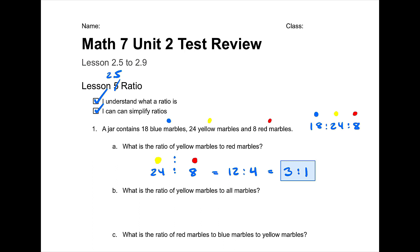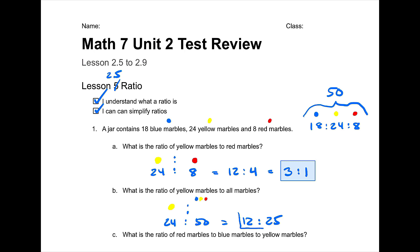The next question asks for the ratio of yellow marbles to all marbles. All is going to be the yellow, the blue, and the red. How many marbles in total are there? Well, 18 plus 24 is 42, plus 8 is 50. Double-check that math — 18 and 24 is 42, plus 8 is 50. So yellow is 24 and all is 50. I can simplify this down to 12 to 25. The only number that can divide into 25 is 5, and 5 cannot divide into 12, so we are finished right there.